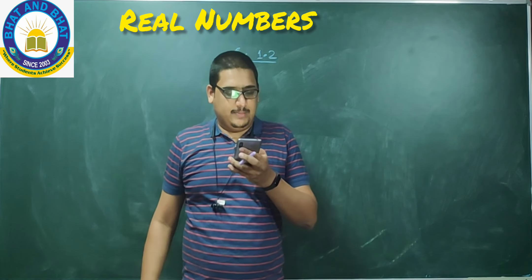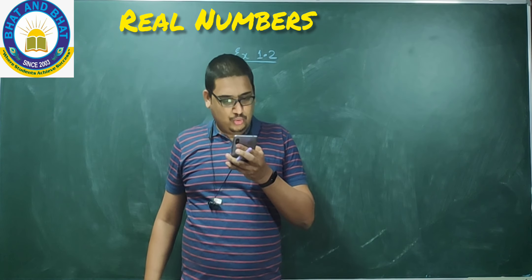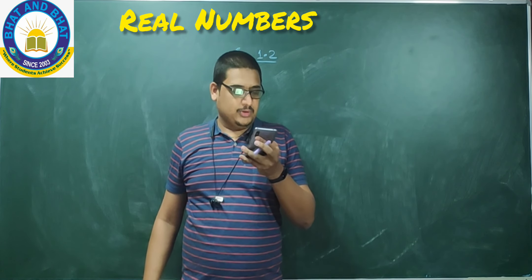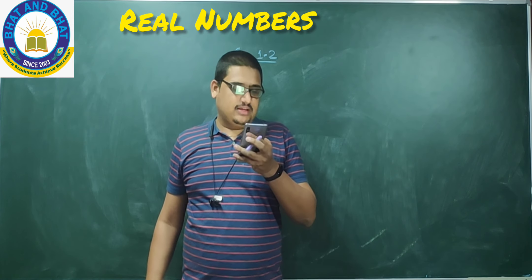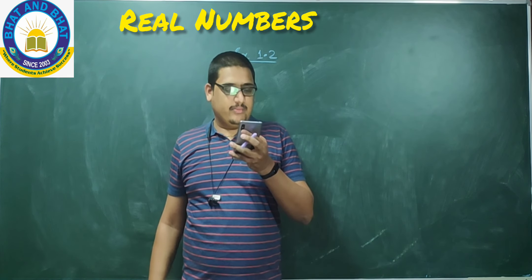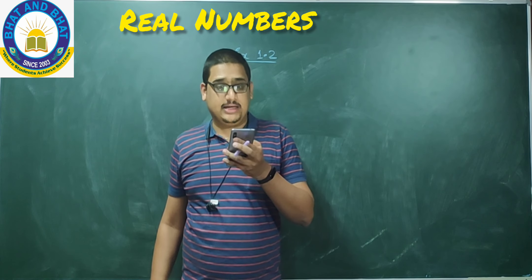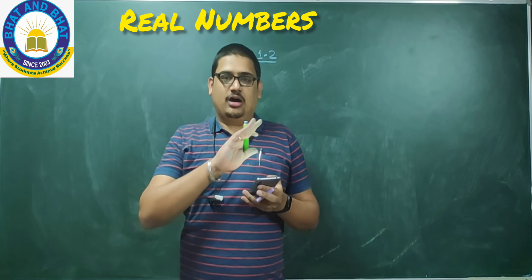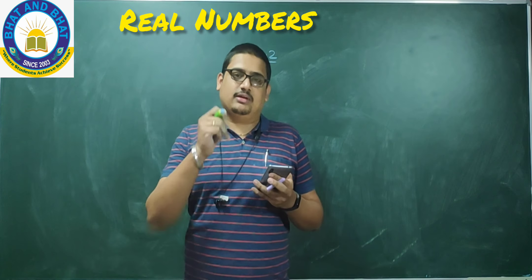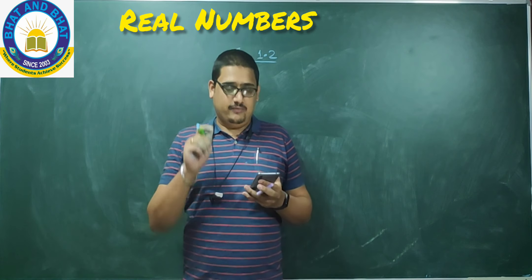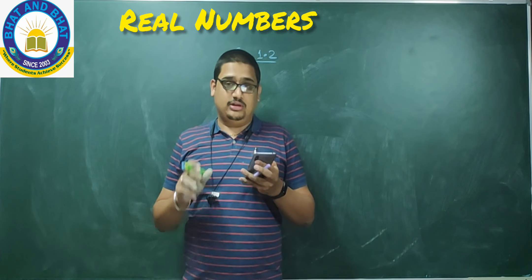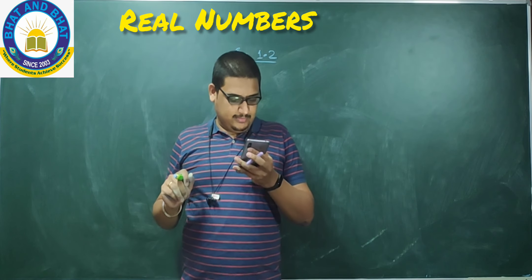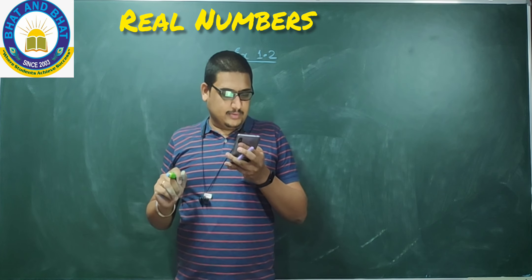Question 2 sub-part 1 is your homework. Question number 3 says: find the LCM and HCF of the following integers by applying the prime factorization method. All 3 sub-questions of question 3 are your homework — these are direct questions which you must solve today.